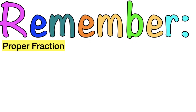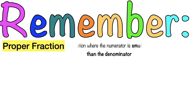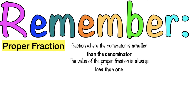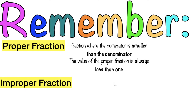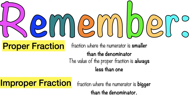Always remember, children: when you say proper fraction, it is the fraction where the numerator is smaller than the denominator, and the value of the proper fraction is always less than 1. While the improper fraction is the fraction where the numerator is bigger than the denominator, and the value of the improper fraction is equal to or greater than 1.